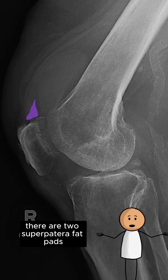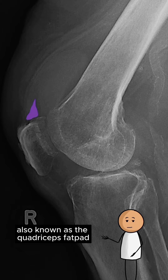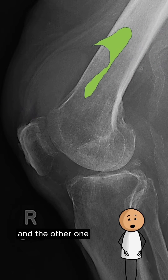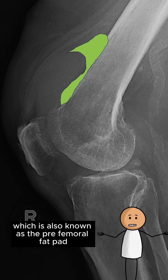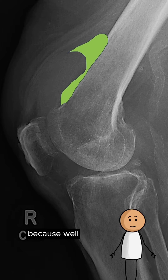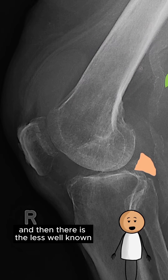There are two suprapatellar fat pads. The anterior suprapatellar fat pad, also known as the quadriceps fat pad, which is located posterior to the quadriceps tendon, and the posterior suprapatellar fat pad, also known as the pre-femoral fat pad, because it is anterior to the femur.